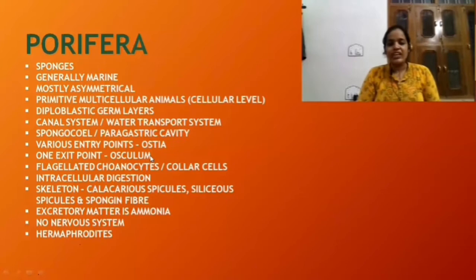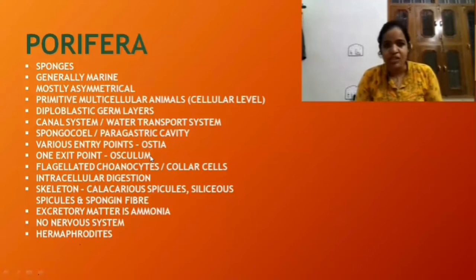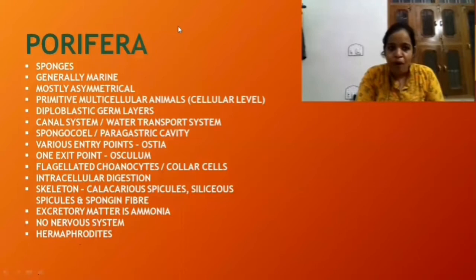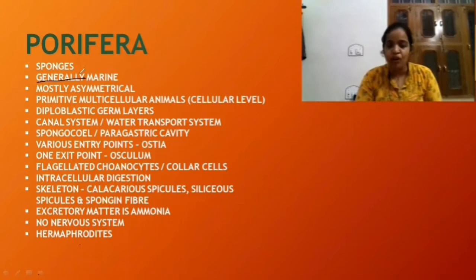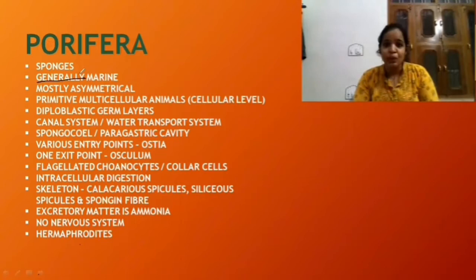The first phylum we have is Porifera. These members are also known as sponges. These are generally marine — not all the members of Porifera are marine. For exams, words like 'generally' and 'mostly' play more importance than the actual character. So remember, they are generally marine, not always marine. They are mostly asymmetrical, meaning we cannot cut a Porifera into two equal halves.